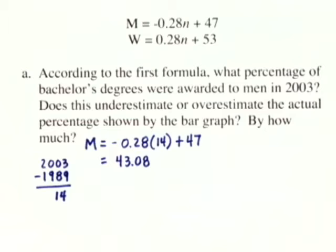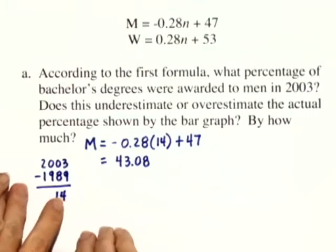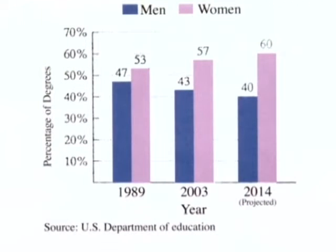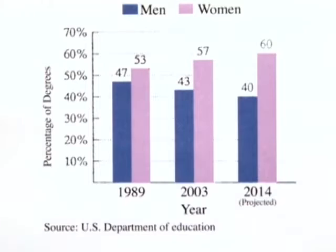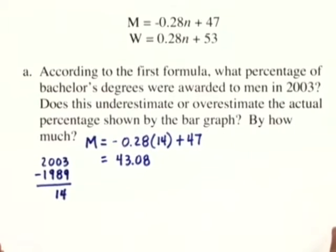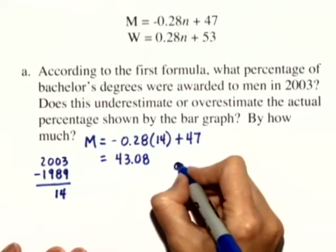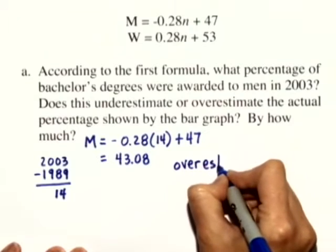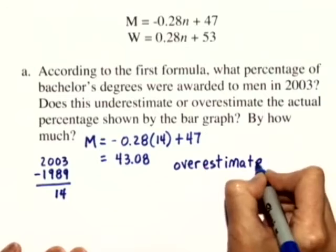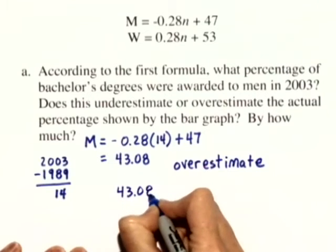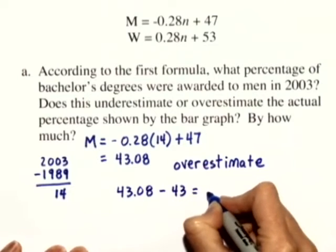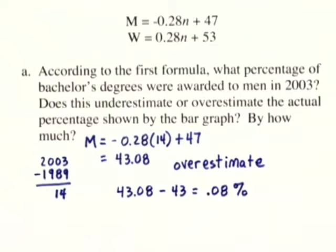Does this underestimate or overestimate the actual percentage shown by the bar graph? Looking at the bar graph in 2003, men — represented by the blue bar — show that exactly 43% of degrees were awarded to men. Our answer was 43.08%, so we have just a slight overestimate — 43.08 minus 43 is just 0.08% of an overestimate.